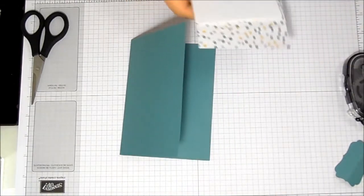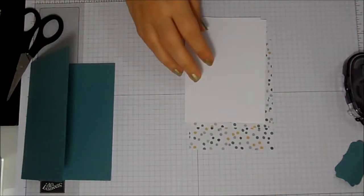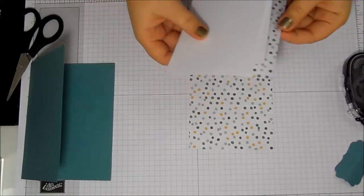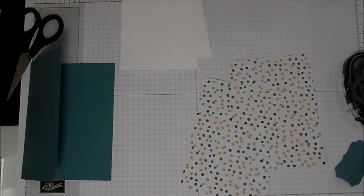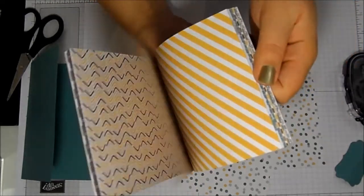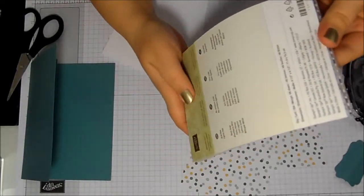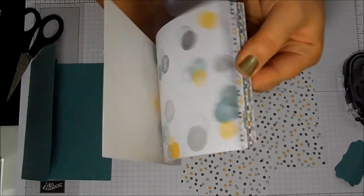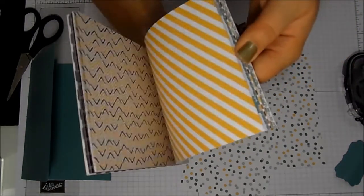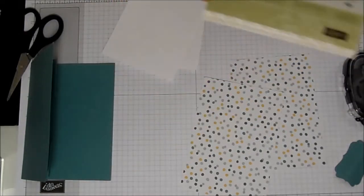I've then got two pieces of DSP, so this is from the Moonlight Designer Series paper stack, which is this one, which is lovely. It's got loads of—it's the In Colors for 2014-2016, so it's got black, blue, bliss, and Lost Lagoon and Hello Honey in it, and it's just lovely.